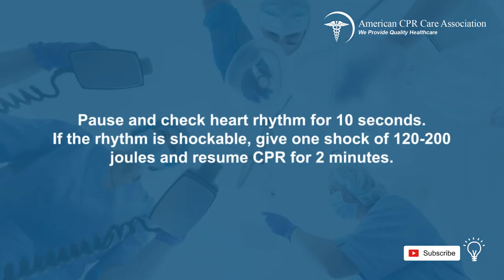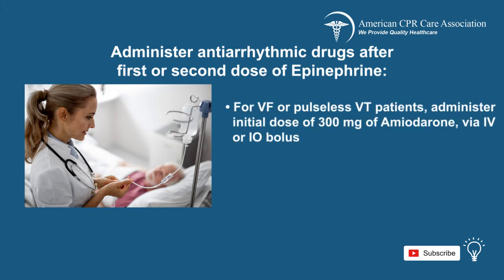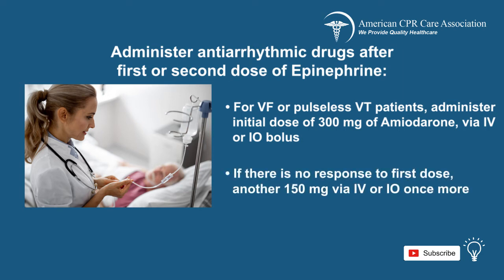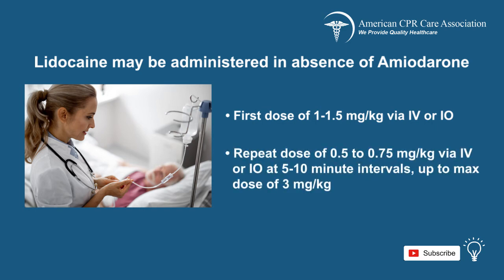Pause to check the patient's heart rhythm for 10 seconds. If the rhythm is shockable, give one shock of 120 to 200 joules and resume CPR for two minutes. Then administer the following anti-arrhythmic drugs after the first or second dose of epinephrine. For VF or pulseless VT patients, administer an initial dose of 300 milligrams of amiodarone via IV or IO bolus, then if there is no response, add another 150 milligrams via IV or IO. If amiodarone is not available, administer lidocaine in a dose of 1 to 1.5 milligrams per kilogram via IV or IO for the first dose, then a second dose of 0.5 to 0.75 milligrams per kilogram at 5 to 10 minute intervals, up to a maximum dose of 3 milligrams per kilogram.